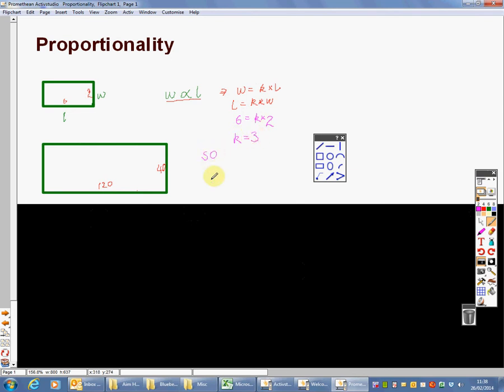So I've now got a formula that says L equals K times W, L equals 3 times W, or 3W. Now I've done this correctly, that formula will also work in this enlarged version. The width here was 40, and the length would be 3 times 40, 120. Yes, it's true.